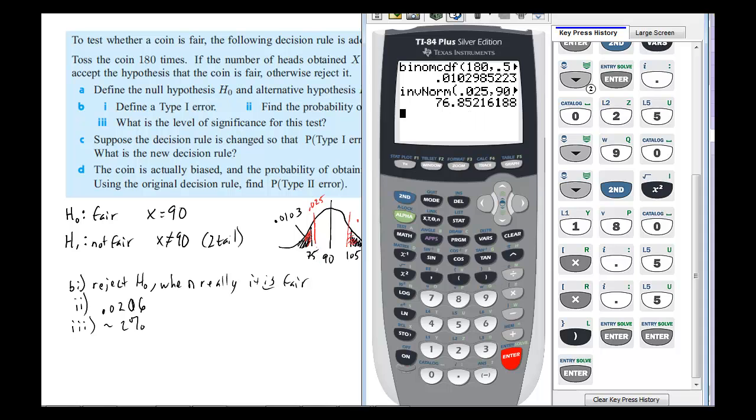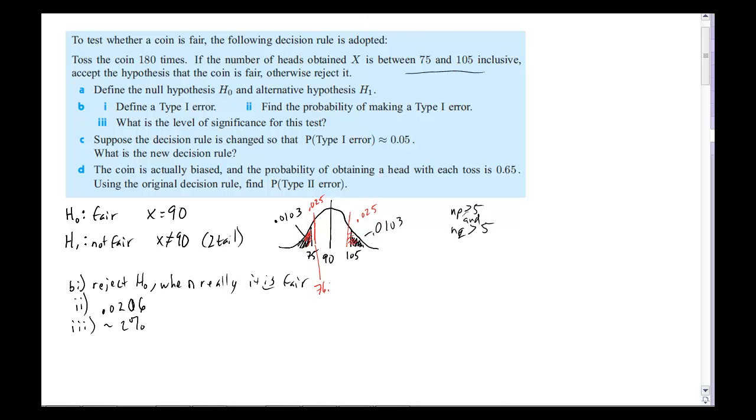So, that means that this value right here is 76.85. That means I want to accept anything from 77 all the way up to, well, that's 13 away, so all the way up to 103. Okay, so the new decision rule is going to be something along the lines of accept between 77 and 103, reject anything outside of that. Okay, now I've got some middle schoolers coming out here, and this is going to be really interesting. So, let me just get through letter D really quick.